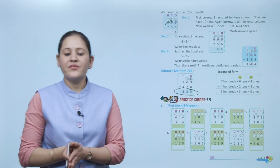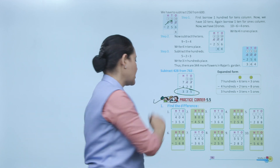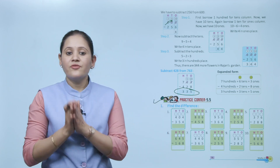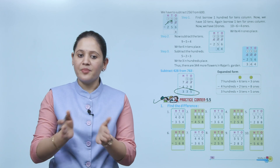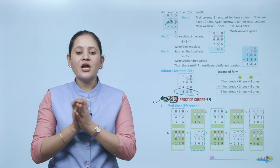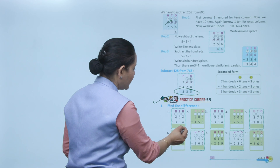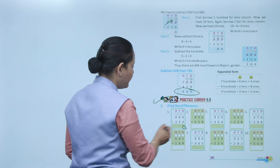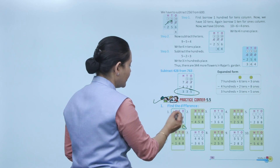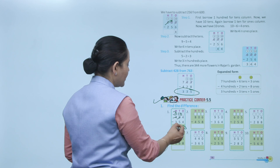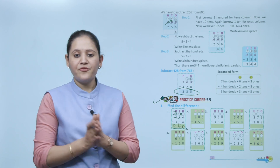Practice corner 5.5 — find the difference. We have to subtract 354 from 404. Ones: 4−4=0. Tens: borrow, so 10−5=5, tens becomes 3. Hundreds: 3−3=0. The difference is 50.